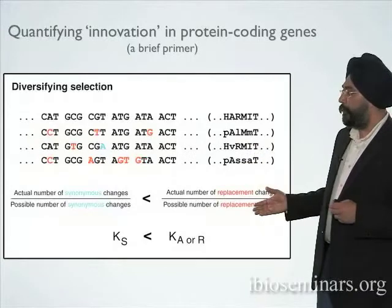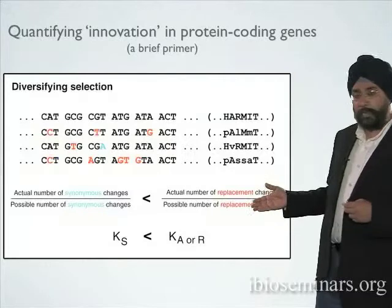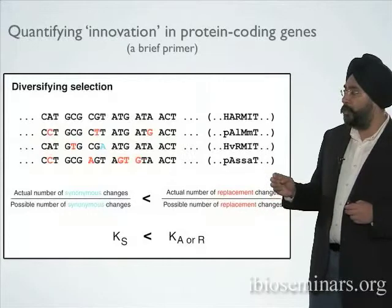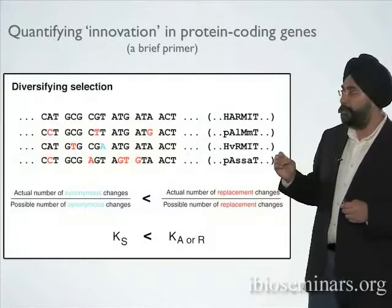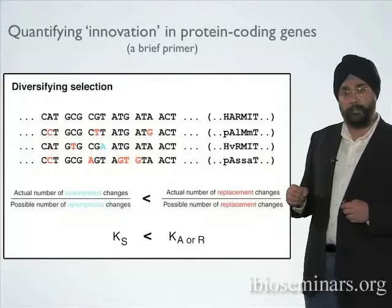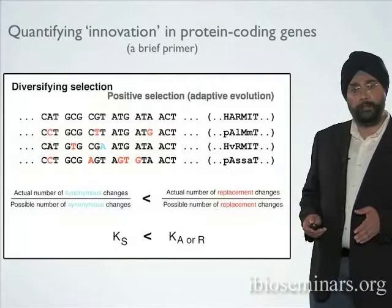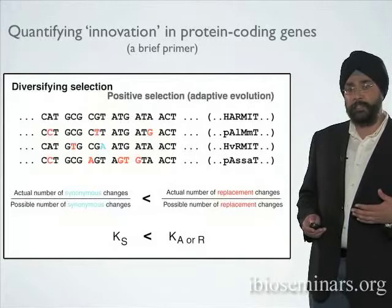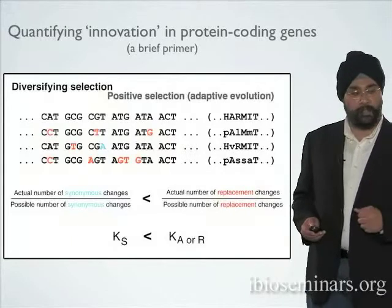Hence the term diversifying selection — in contrast to purifying selection, natural selection is increasing the amino acid diversity of these protein-coding genes. As a result, the apparent rate of replacement changes, Ka or Dn, is increased over the apparent rate of synonymous changes. This is not a bias introduced by mutation; it is simply a different selective sieve acted upon by natural selection. The term diversifying selection is also referred to as positive selection or adaptive evolution — I'll use these terms interchangeably, and they differ only in the tempo at which these changes happen.